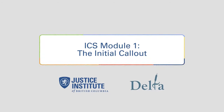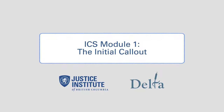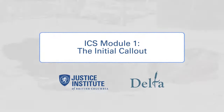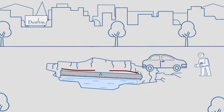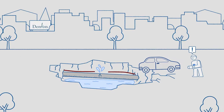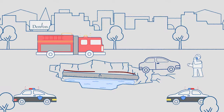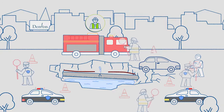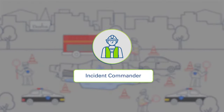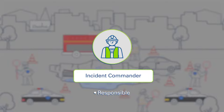ICS Module 1 – The Initial Call-Out. In this scenario, first responders are receiving reports of a sinkhole and flooding in the city of Denton. Fire and police respond to the scene. Fire assumes the role of Incident Commander to address immediate life safety issues. The Incident Commander is the person responsible for all aspects of an emergency and remains in charge until the situation is resolved.